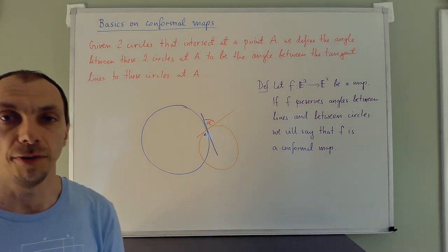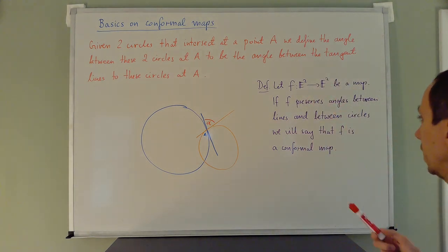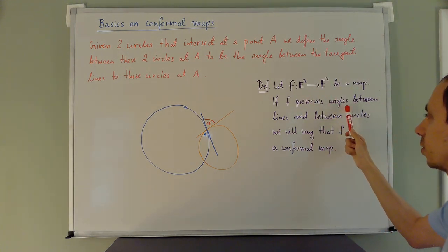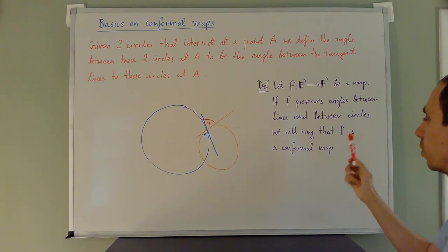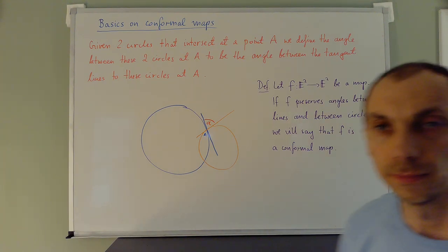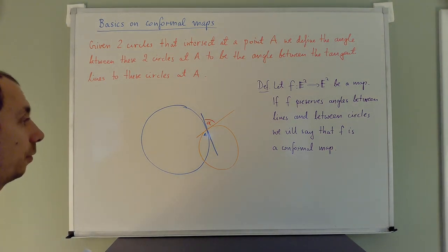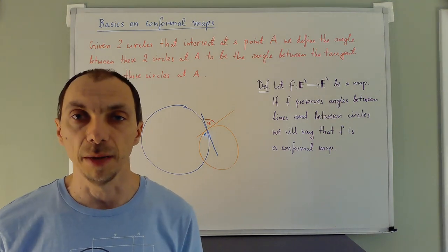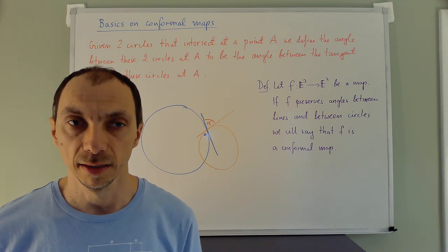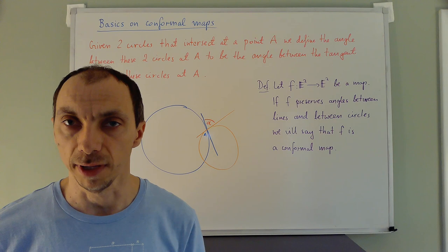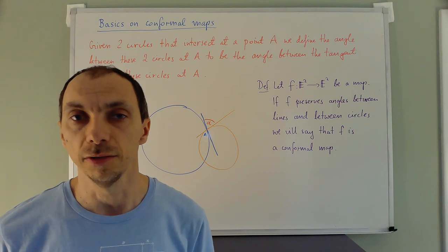And then I define a map: a map from the plane to the plane that preserves angles between lines and between circles — we will call such a map a conformal map. So the first question that comes to mind: we know essentially two kinds of maps — rigid motions and inversions. Rigid motions preserve length and inversions do not preserve length. The question is: do any of them preserve angles? That is, are any of them conformal?